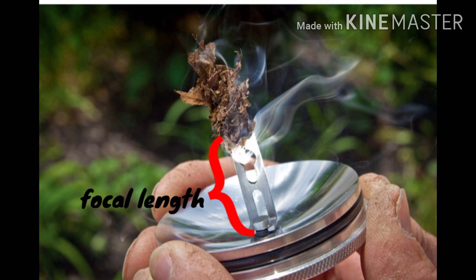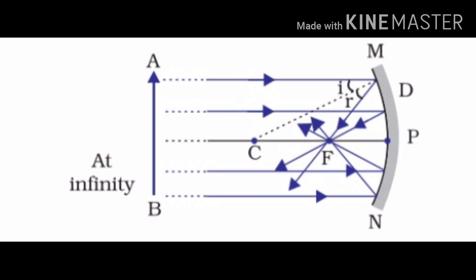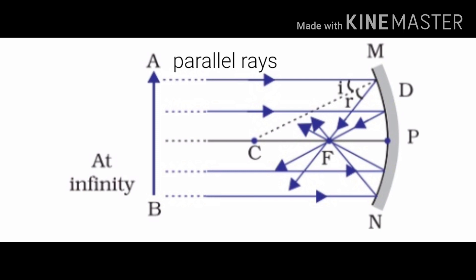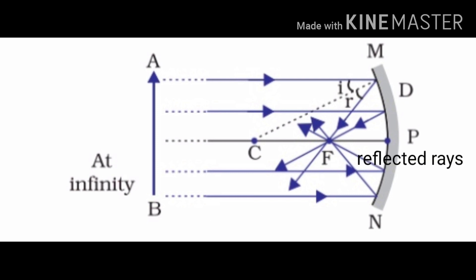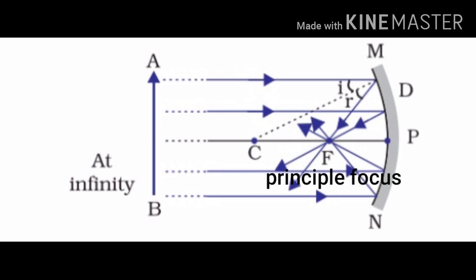The light from the sun is converged at a point as a sharp bright spot by the mirror. This spot of light is the image of the sun on the sheet of paper. This point is the focus of the concave mirror. The heat produced due to the concentration of sunlight ignites the paper. The distance of this image from the mirror gives the approximate value of focal length. A number of rays parallel to the principal axis falling on a concave mirror are all meeting at a point on the principal axis, which is called the principal focus of the concave mirror.